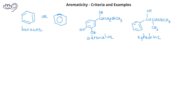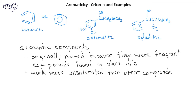Other benzene derivatives have been synthesized to find some uses. Overall, these compounds with a benzene ring are called aromatic compounds because many of the original compounds containing these benzene rings were found in plant and tree oils, and they had very pleasant aromas. Now, we use the term aromaticity to refer to certain types of structures.